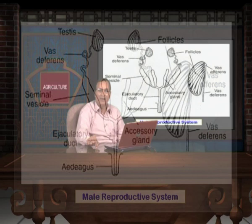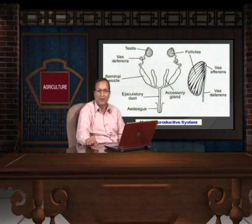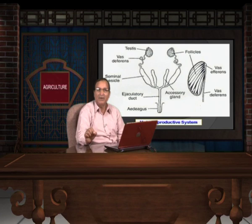The male genital aperture is surrounded by the opening of the ejaculatory duct, the aedeagus, and the male genital structure itself. The male reproductive system is also supported by accessory glands, and the secretion of the accessory gland is necessary because it gives motility to the sperms and keeps them alive for a longer time.